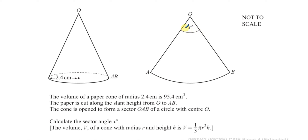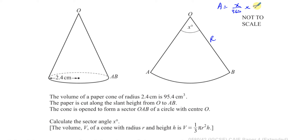The angle X is the angle in the sector. There are two formulae we know for a sector. One is for the area of a sector: (X/360) × π × R², where R is the radius of the sector. The other formula involves the length of the arc L, which equals (X/360) × 2πR — that is, the fraction of the full circumference.